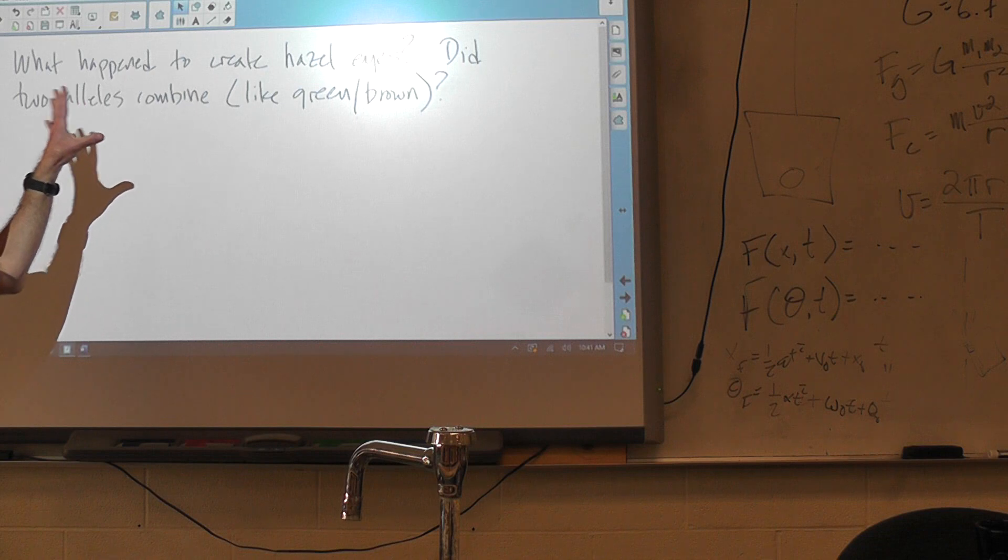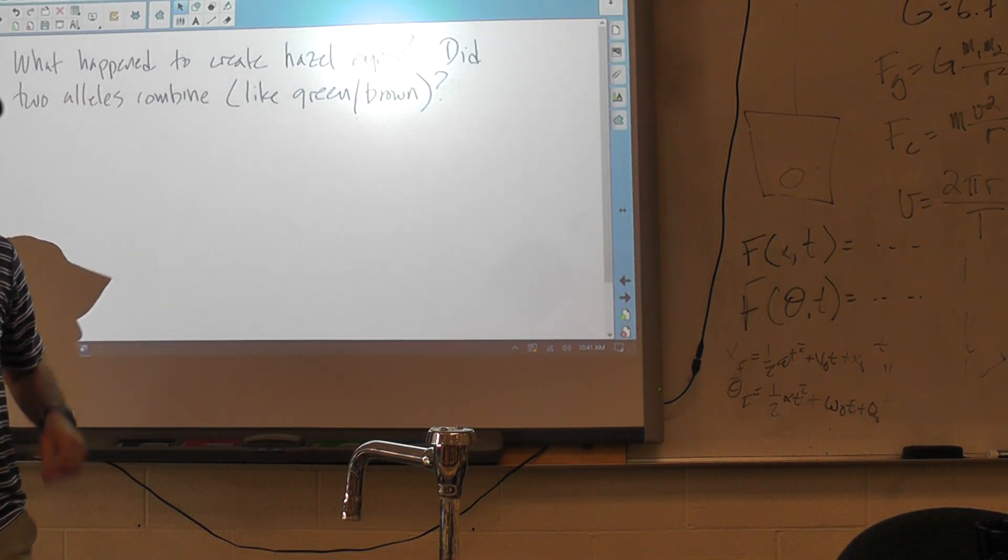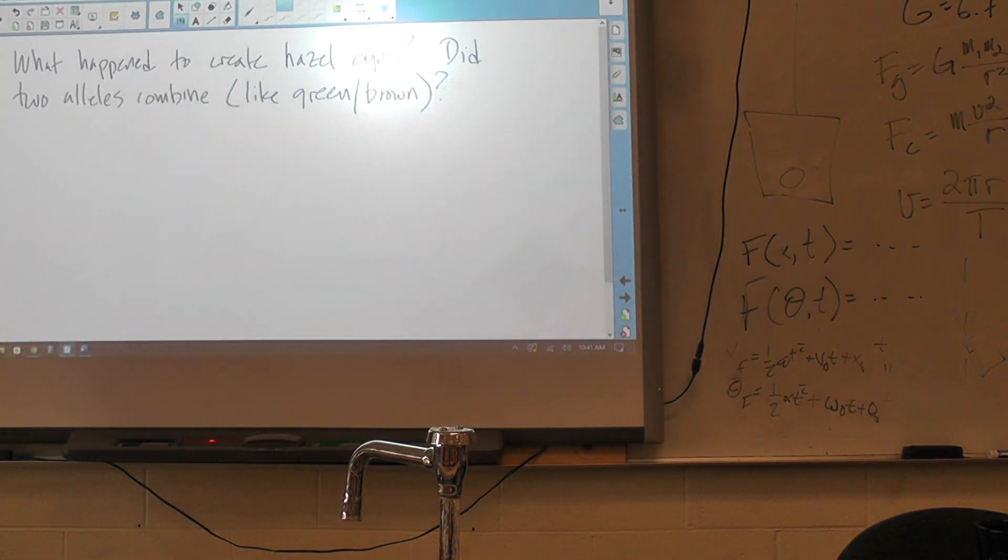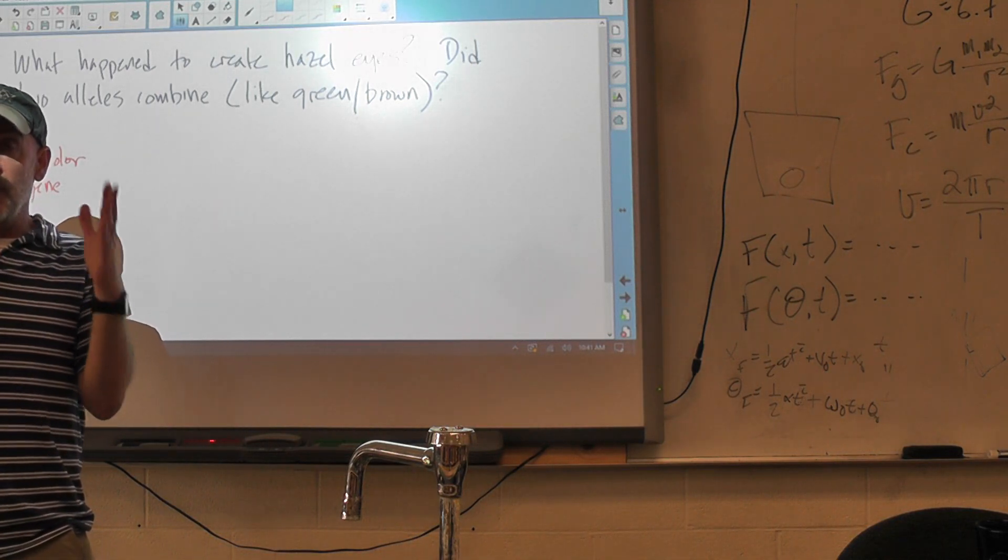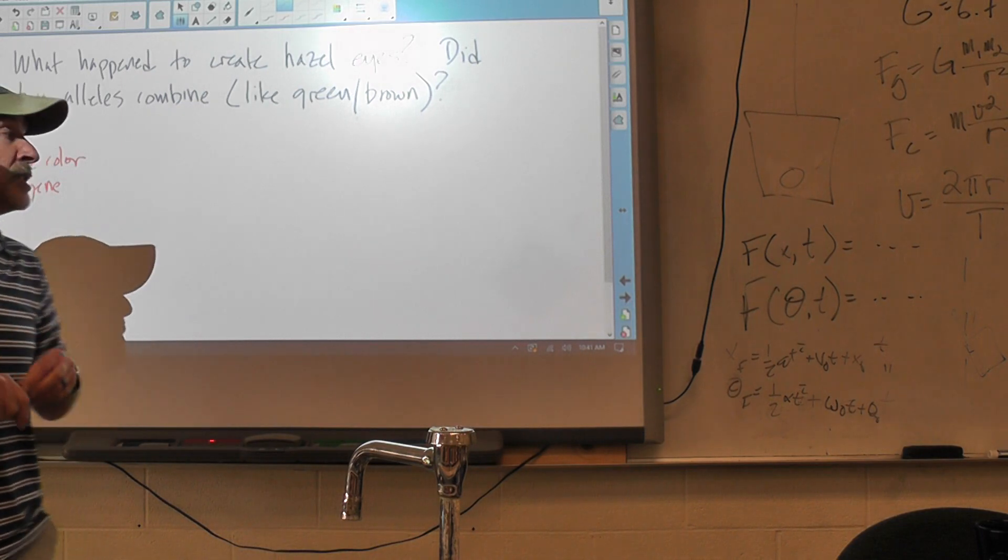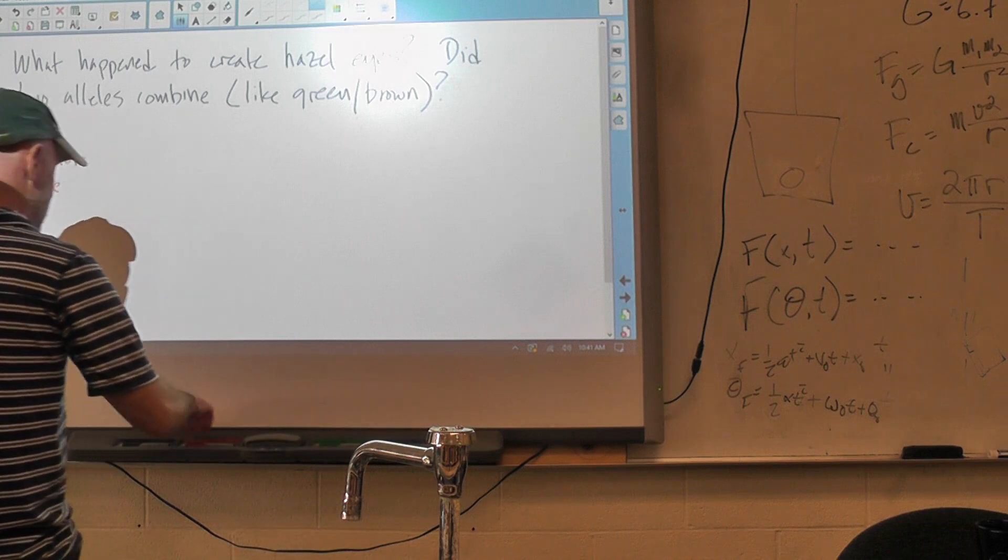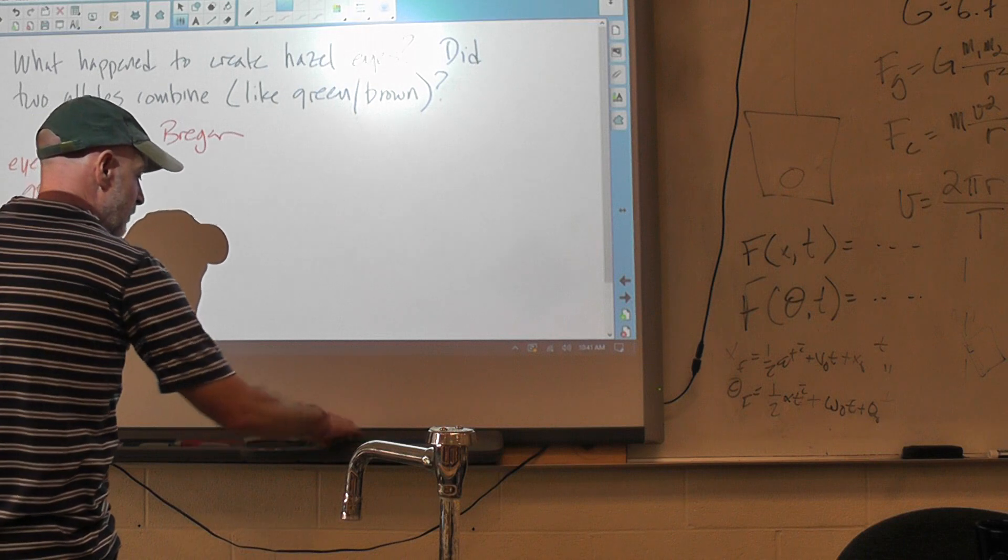So let's talk about this for a second, because there's a few different possibilities. One possibility is that we have one gene for eye color. And since humans, adults, have two copies of every gene, then we would have two alleles for that gene. So any one individual like me would have two alleles for that gene. They might be the same or they might be different.